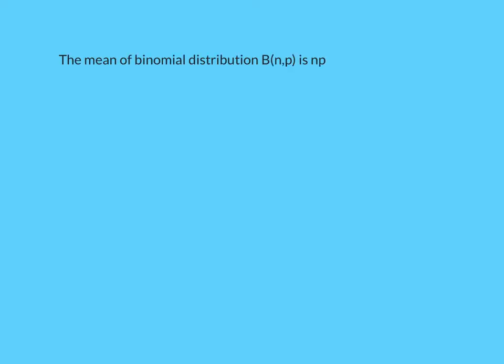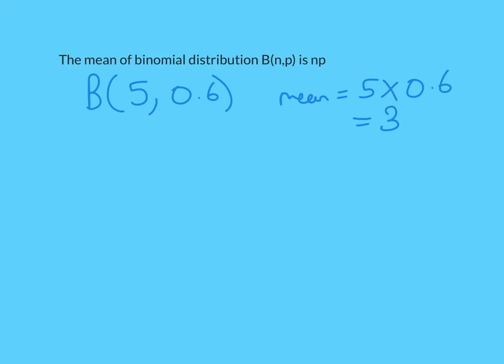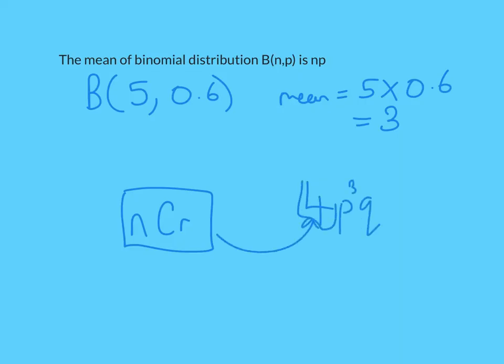Now, what if I wanted the mean of a binomial distribution? The mean is simply N times P — the number of trials times the probability of success in each trial. For example, if I had a binomial distribution of B(5, 0.6), my mean would equal 5 × 0.6 = 3. Also, on your calculator there is a button you can use to calculate the coefficients, which is useful at A level. At this stage, though, using Pascal's triangle is probably the most useful method.